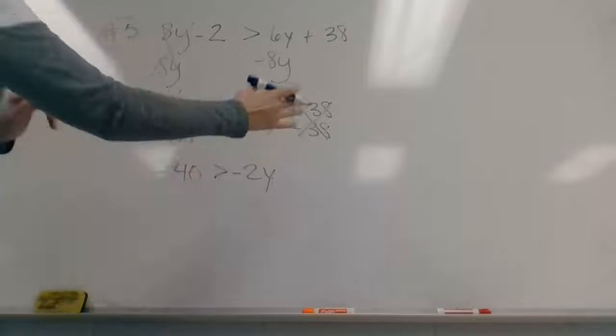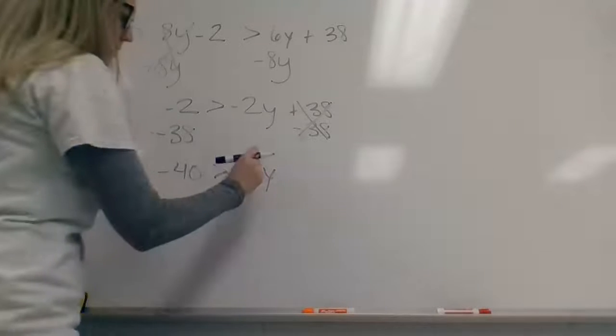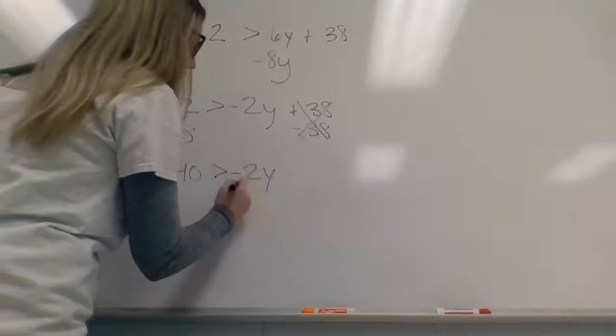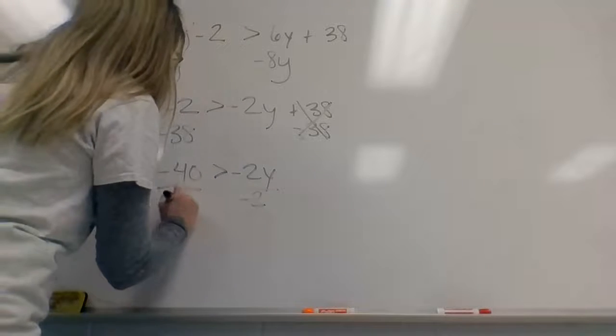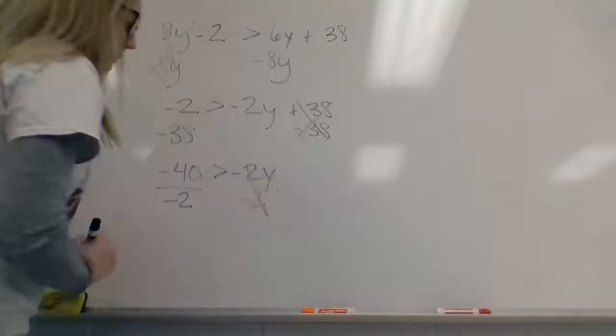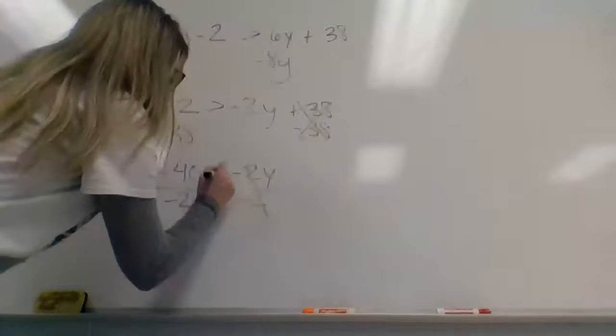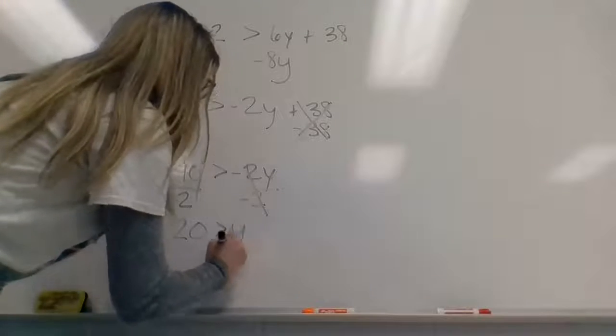Not quite done yet. I still need to get y by itself. This is being multiplied here. This is saying negative 2 times y. So in order to undo that, I need to divide both sides by negative 2. And this is going to say now 20 is greater than y.